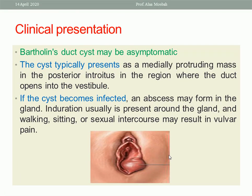The clinical presentation of Bartholin duct cyst may be asymptomatic. The cyst typically presents as a medially protruding mass in the posterior introitus, making the introitus look S-shaped. As seen in the picture, there is an S-shaped introitus due to swelling in the left side. The cyst typically protrudes in the region where the duct opens. If the cyst becomes infected, an abscess may form, induration is usually present around the gland, and walking, sitting, or sexual intercourse may result in vulvar pain.